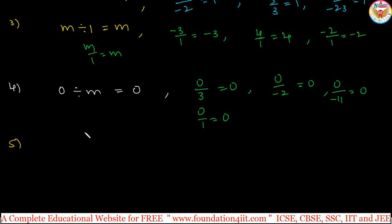And for every integer, m divided by 0. So, it is not defined. This case is not defined. If any examples you find like this, for example, 3 divided by 0. So, this is not defined. So, this is not meaningful.